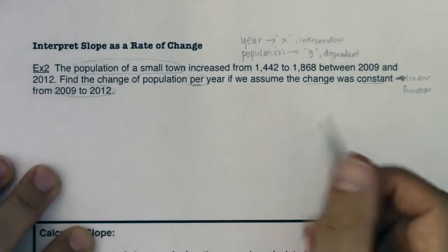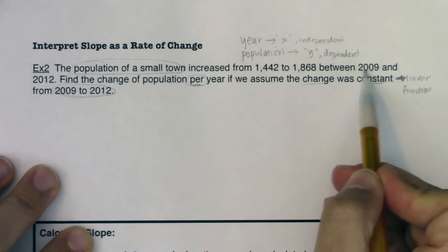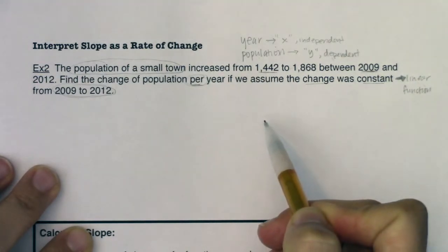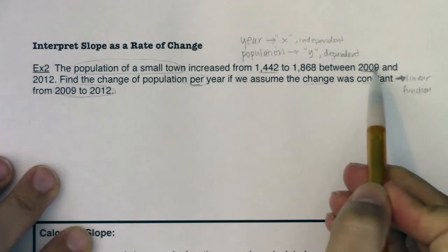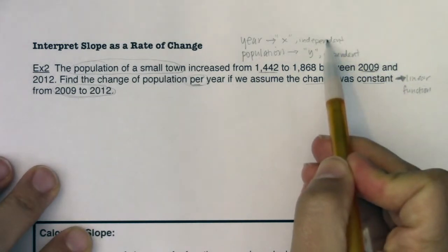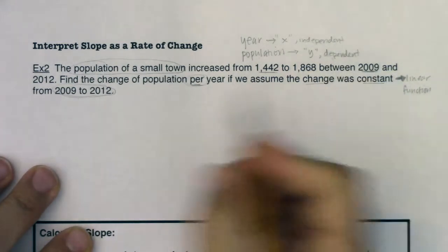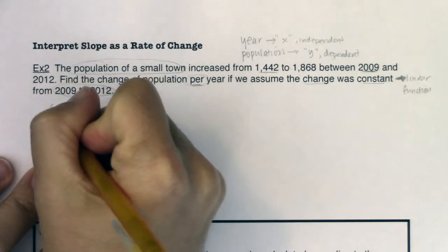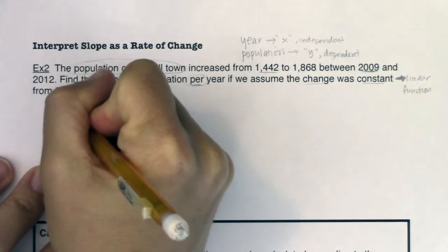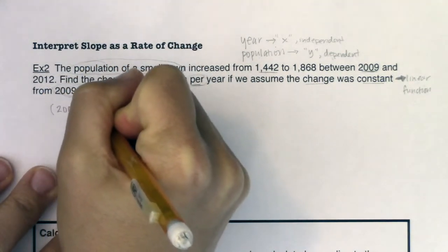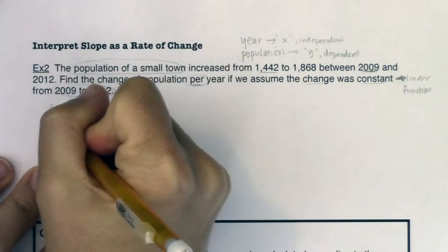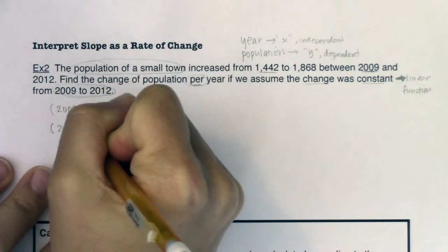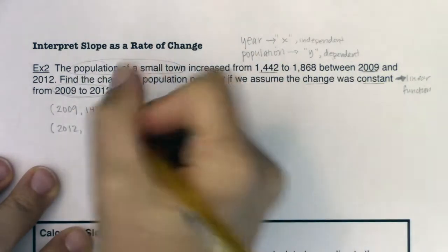here and we have to be on the listen for them. So I see in 2009, I had 1,442 folks in my town. So I had an x value of 2009 and a y value of 1,442. I'm just going to write that out here. We've got 2009, 1442. I also hear my other ordered pair of 2012 and 1,868.